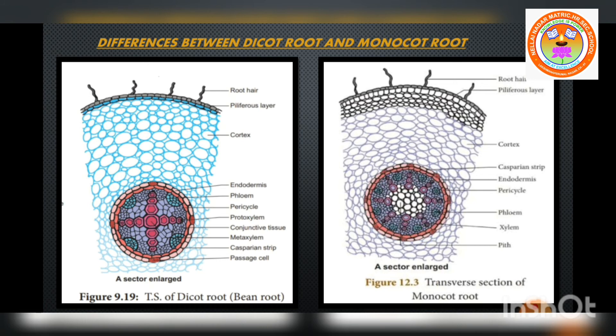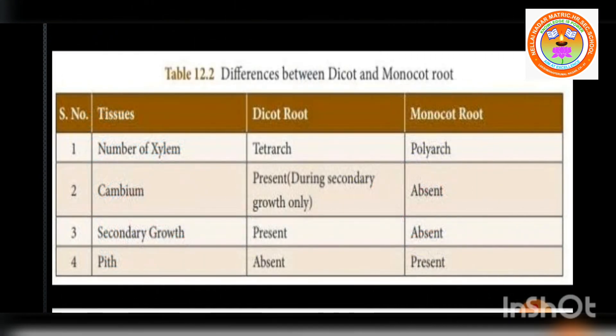Regarding the number of xylem: in dicot root, a tetrarch condition is present — dicot root has 4 protoxylem points. But in monocot root, the condition is polyarch — many protoxylem points are present. Regarding cambium: in dicot root, cambium is present during secondary growth only. But in monocot root, cambium is absent.